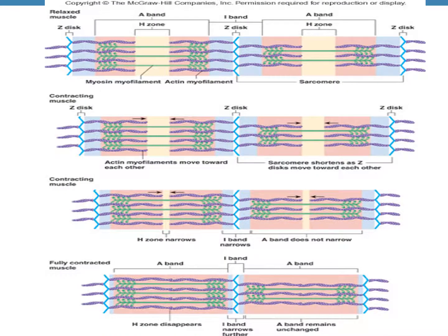This figure explains the sliding filament model of muscular contraction. Looking at the top panel of the figure, this is a relaxed muscle. The myosin filament is shown in green color, the actin filaments are in purple, and the Z line or Z disc is shown in turquoise blue. The region in the center of the A band is the H zone, where there is only the myosin filament and no actin filament. When the muscle is relaxed, the Z lines are away from each other and you can see a wide H zone.